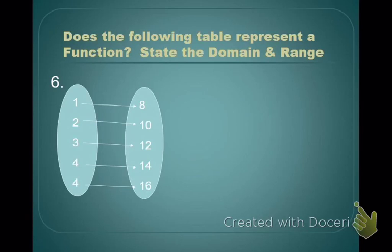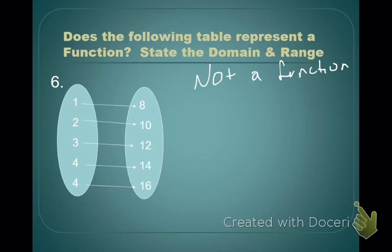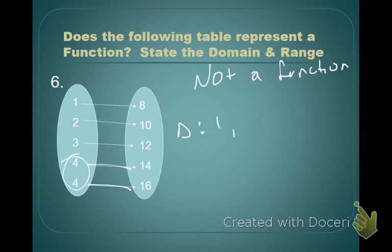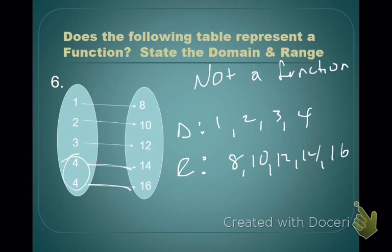How about this one? This is not a function. Why not? Because apparently when you put a 4 into this relation, you might get a 14 or a 16, and we can't have to guess. There is an input that goes to more than one output, so it can't be a function. Domain: 1, 2, 3, 4. Range: 8, 10, 12, 14, 16.